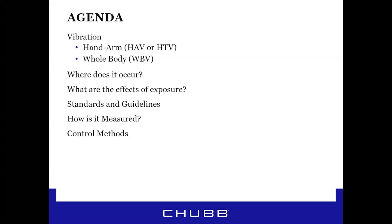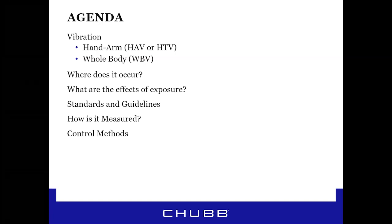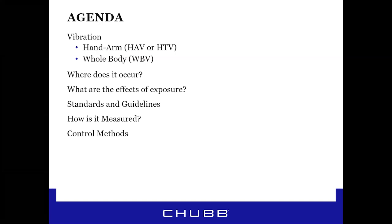Here's what I'm going to talk about today. We're going to discuss vibration — both hand-to-arm vibration, acronym HAV, also sometimes called HTV (hand transmissible vibration) — and whole body vibration. We'll talk about its occurrence in the workplace, the effects of exposure, physical symptoms and what can develop from it, what standards and guidelines are in place in the US and elsewhere, measurement of vibration, and control measures.